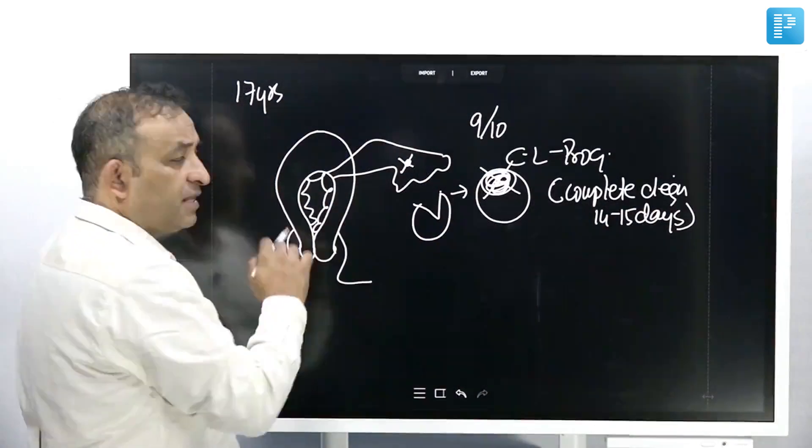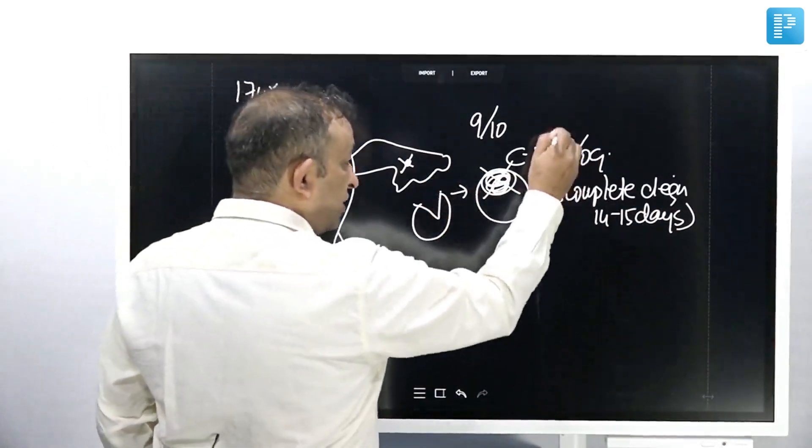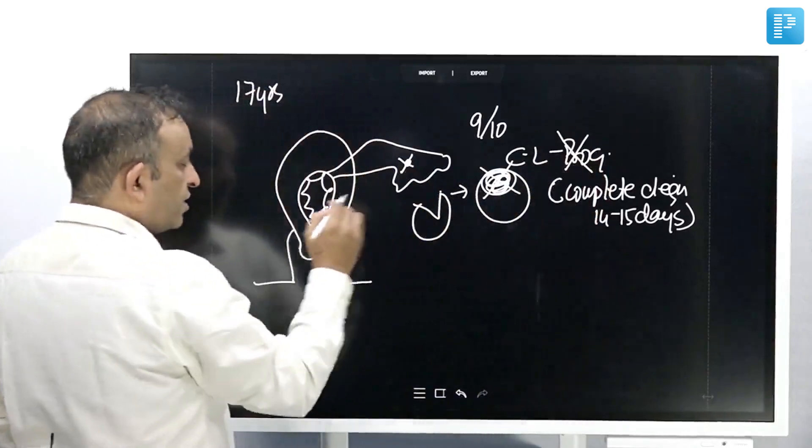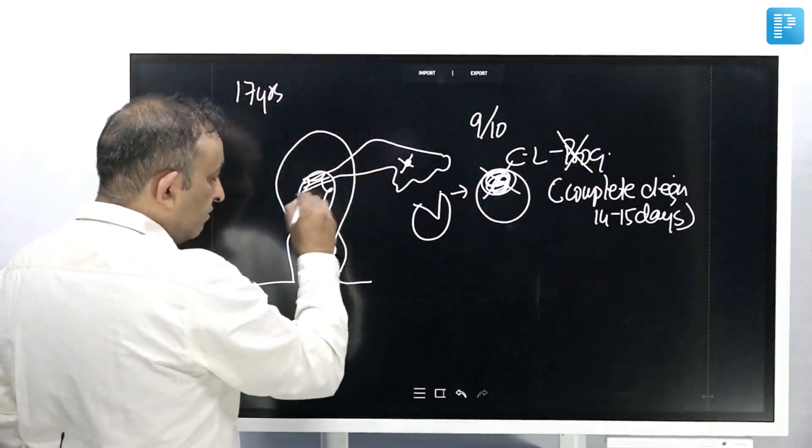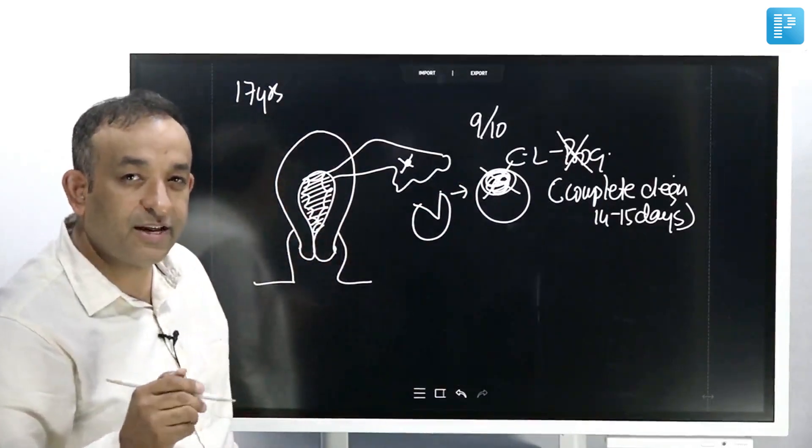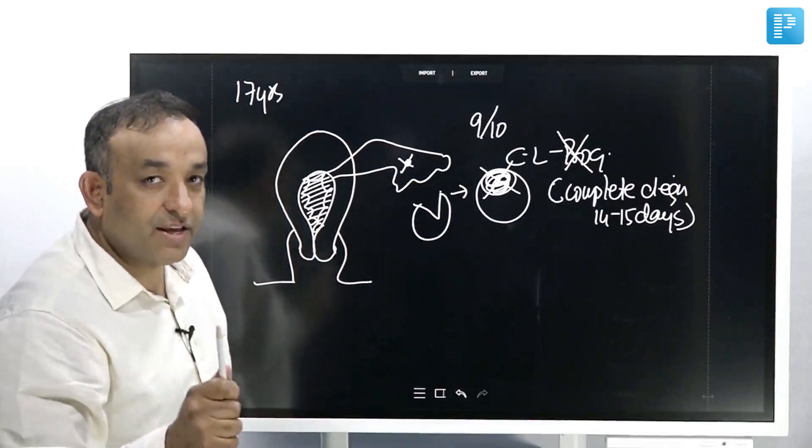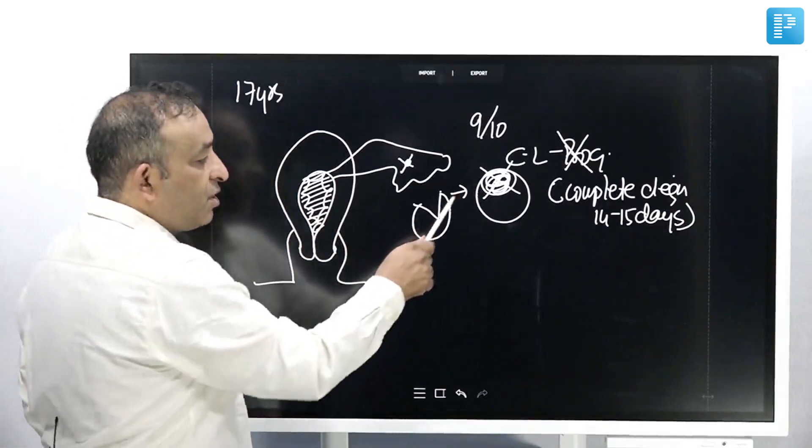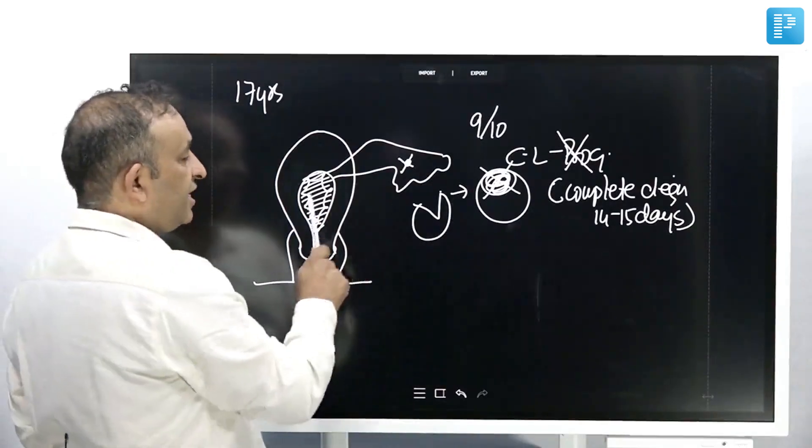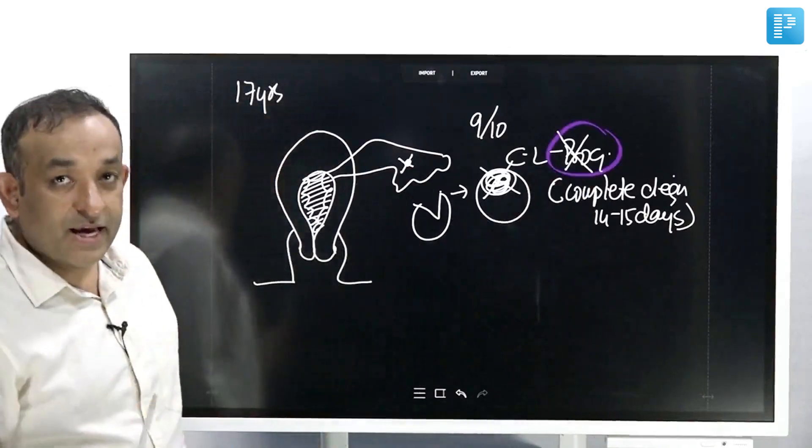In this 9th to 10th day, the embryo never came, the corpus luteum degenerated and the progesterone reduced, which causes the shedding of the endometrium. What did I say? Shedding or expelling? I said shedding. Shedding of the endometrium is a progesterone withdrawal event.